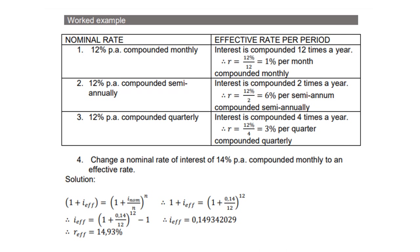Number 4: change a nominal rate of 14% per annum compounded monthly to an effective rate. You substitute I_nominal with 0.14, divide by 12 — because it is monthly, there are 12 months in a year — to the power of 12. Using your calculator to simplify, you get I_effective equals 0.1493, which you then convert back to a percentage by multiplying by 100, giving 14.93%.